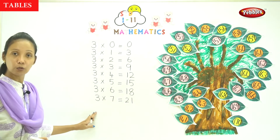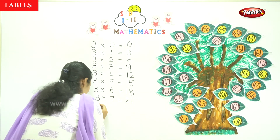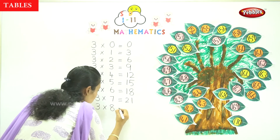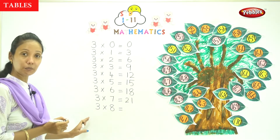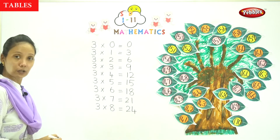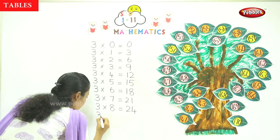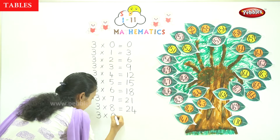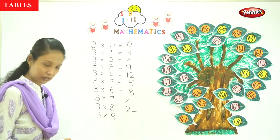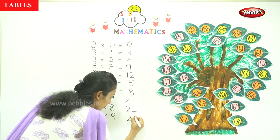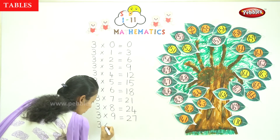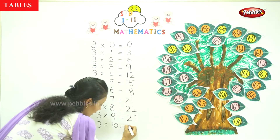3 into 7 equals 21. That is correct. 3 into 8 — how much is it? 3 into 8 is 24. That is 3 into 8 is equal to 24. 3 into 9 is equal to — what is the answer? 27. That is 27. Last one: 3 into 10 equals 30.